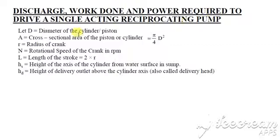The basic dimensions of the reciprocating pump we will consider: Let capital D be the diameter of the cylinder or piston. The cross-sectional area of the piston or cylinder is π/4 D². Let small r be the crank radius. Capital N is the rotational speed of the crank in rpm. Capital L is the stroke length, which equals twice the crank radius. HS is the suction head and HD is the delivery head.